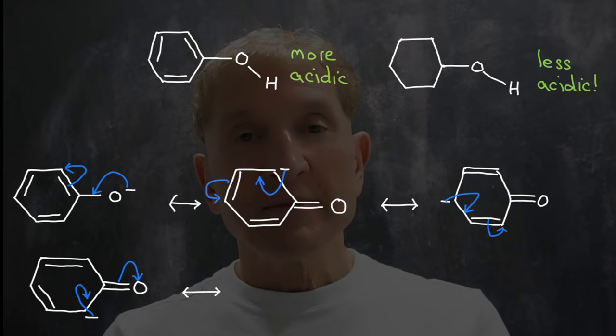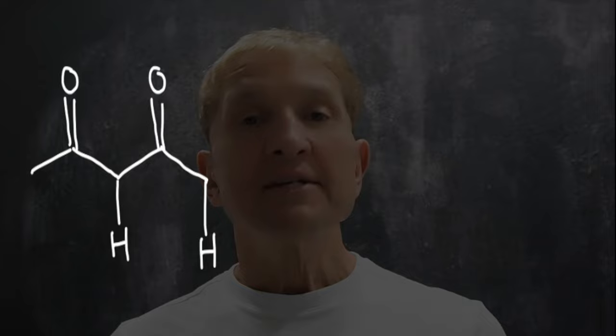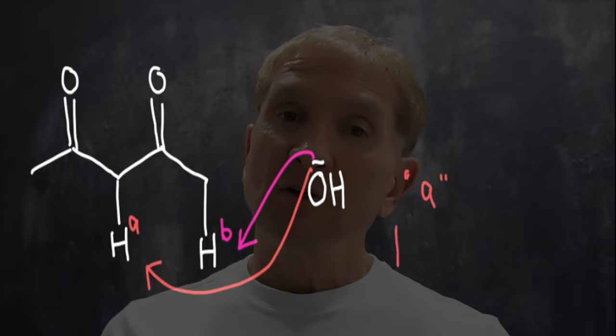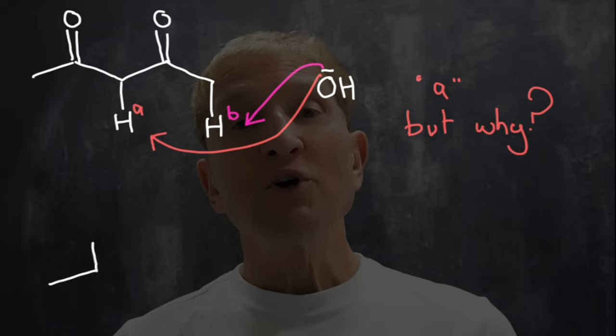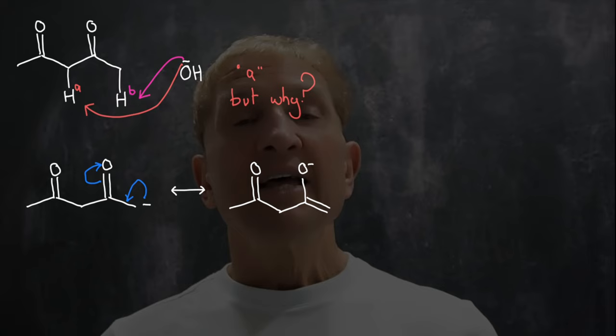This acid-base concept comes up in my next workbook in this series on acids and bases. Let's take this 1,3-dicarbonyl here — this is 2,4-pentadione. If I present a base to this, does it deprotonate on one of the terminal methyls to give this enolate? Or does it deprotonate in the middle on that methylene to give this enolate? If I show the deprotonation of the terminal methyl group, that gives me an enolate where the negative charge can oscillate between one oxygen and one carbon.